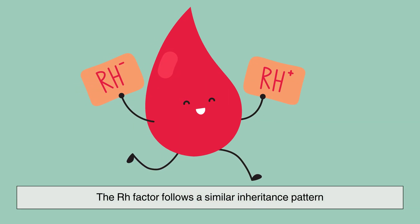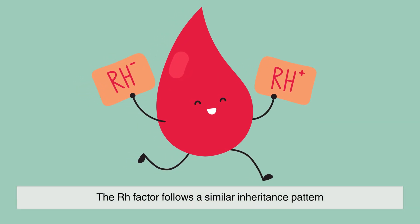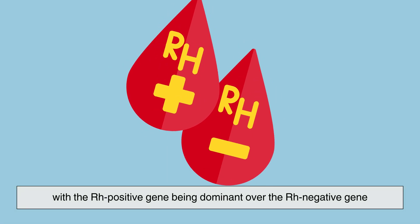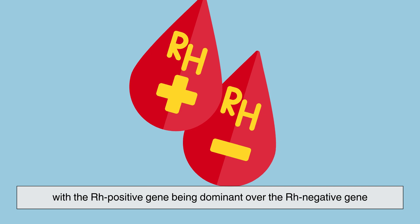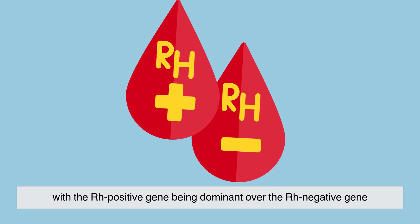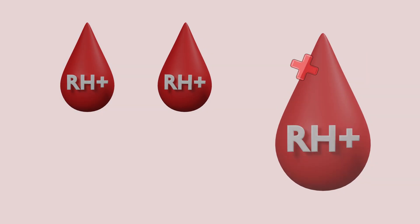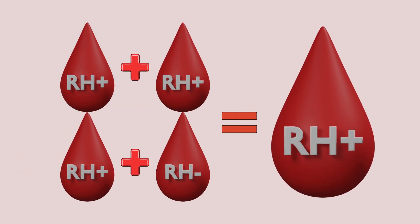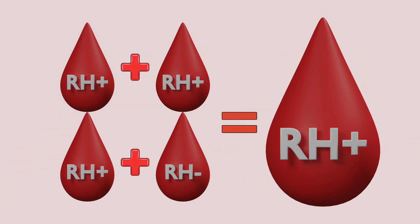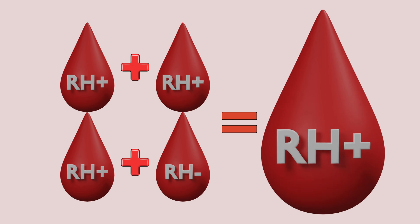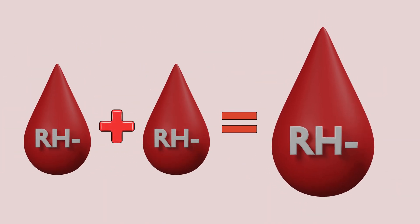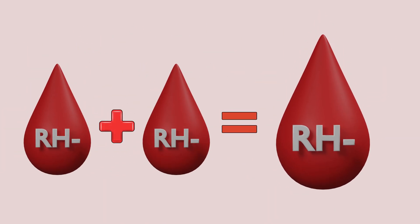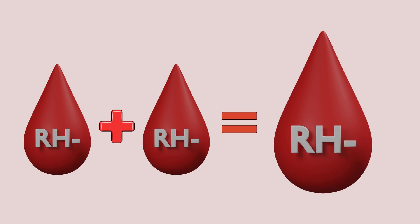The Rh factor follows a similar inheritance pattern, with the Rh positive gene being dominant over the Rh negative gene. If a person inherits at least one Rh positive allele, they will be Rh positive. Only those who inherit two Rh negative alleles will be Rh negative.